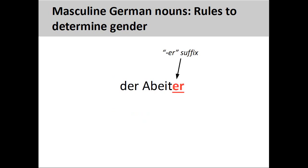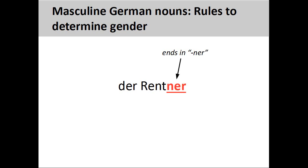Nouns ending in '-er' that are derived from verbs are masculine. For example, the noun 'Arbeiter' (worker) is derived from the German verb 'arbeiten,' meaning 'to work.' Nouns ending in '-ich,' such as 'Teppich' (rug or carpet), are masculine. Nouns ending in '-ner,' such as 'Rentner' (pensioner), are also masculine. We'll see a way to form feminine versions of these nouns in a later presentation.